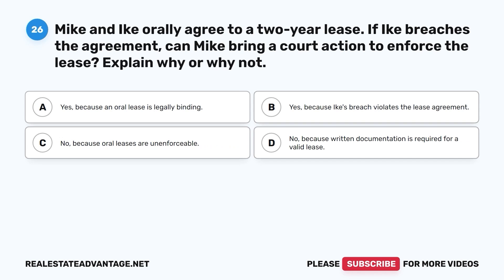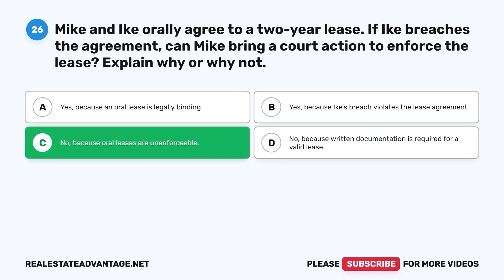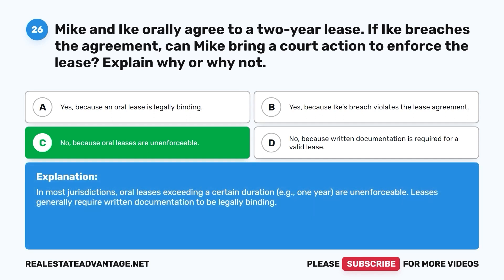Question 26. Mike and Ike orally agree to a two-year lease. If Ike breaches the agreement, can Mike bring a court action to enforce the lease? A. Yes, because an oral lease is legally binding. B. Yes, because Ike's breach violates the lease agreement. C. No, because oral leases are unenforceable. D. No, because written documentation is required for a valid lease. The correct answer is C. In most jurisdictions, oral leases exceeding a certain duration — for example, one year — are unenforceable. Leases generally require written documentation to be legally binding.